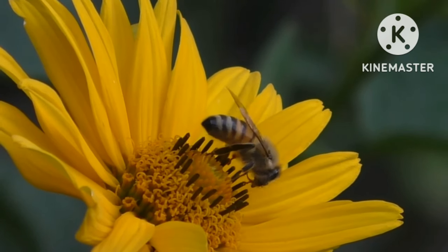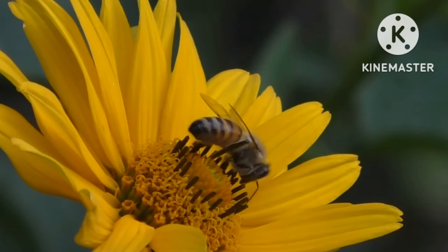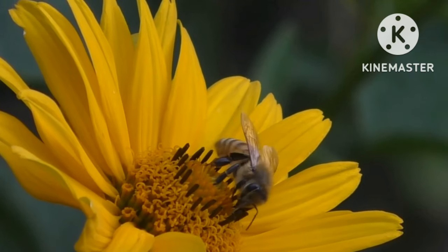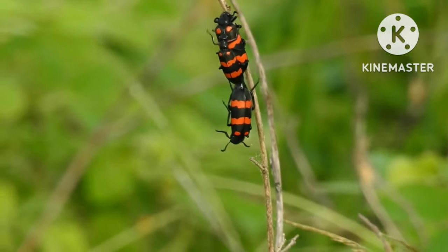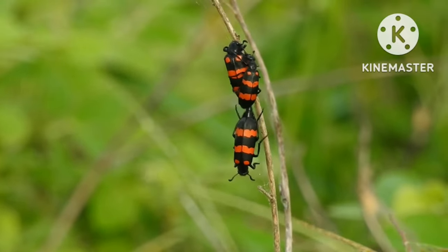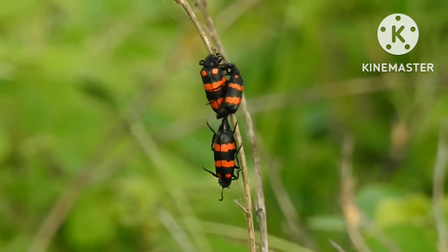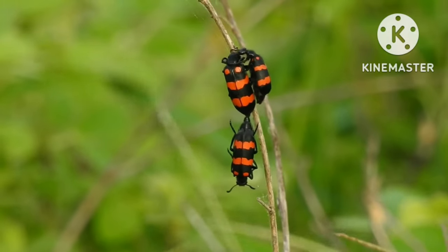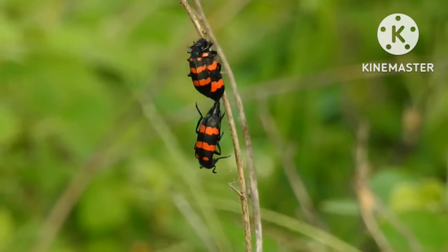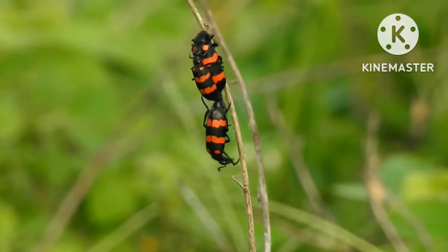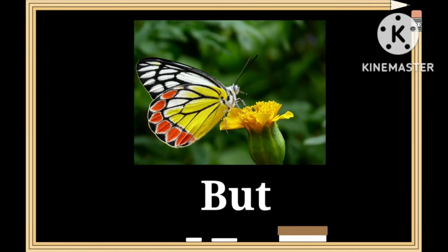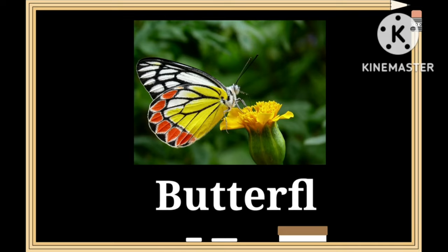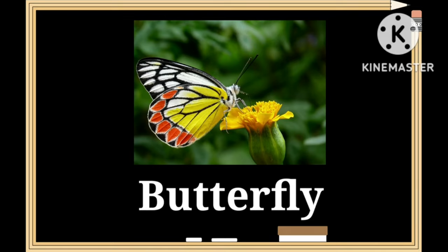Many flowering plants depend on bees as they spread a substance called pollen to help them produce. At the end of this lesson, you will be able to identify different types of insects that we see around us. So let's begin without any further delay.